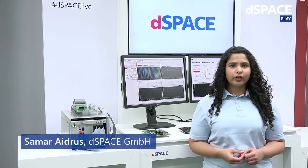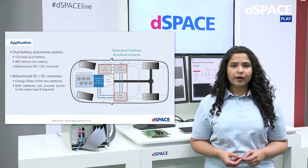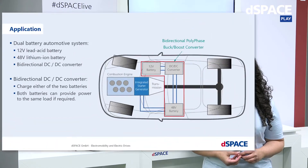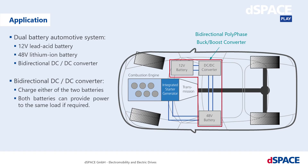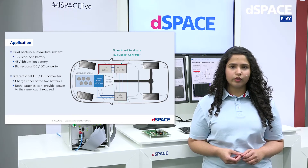Today I would like to show you a demo regarding a dual battery automotive system. This technology targets mild hybrid vehicles which include an integrated starter generator. This bus system supplements the existing 12-volt lead-acid battery with another 48-volt lithium-ion battery. In addition, a bidirectional DC-DC converter bridges the two 12-volt and 48-volt systems, and it can be used to charge either battery or for power transfer from both batteries to the same load if required.